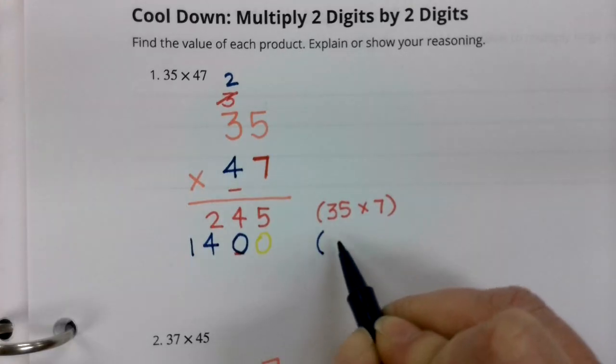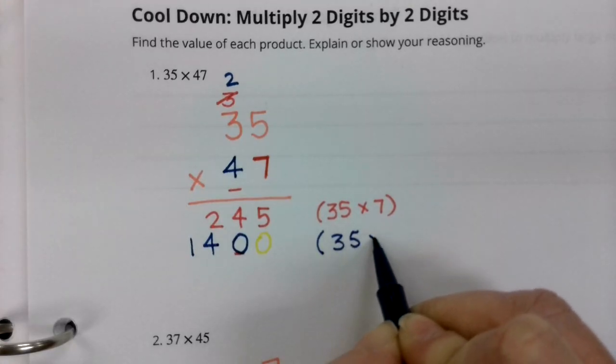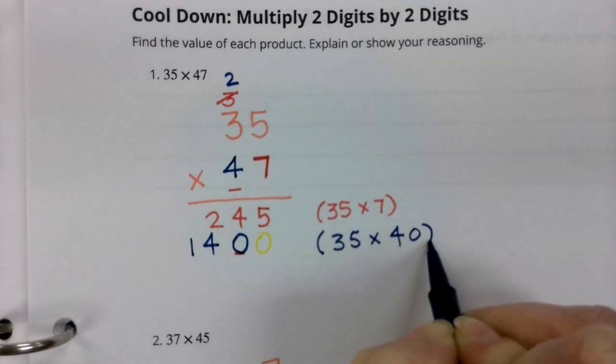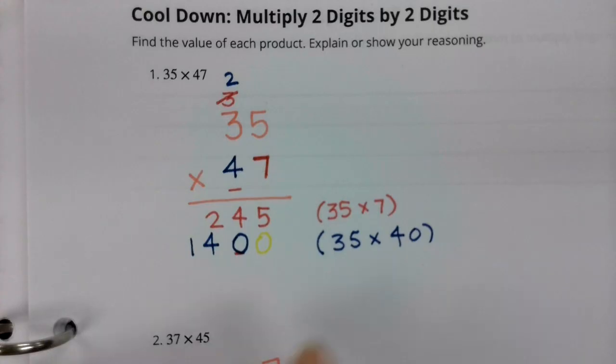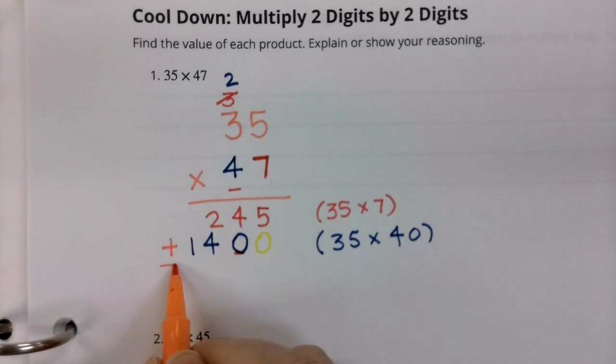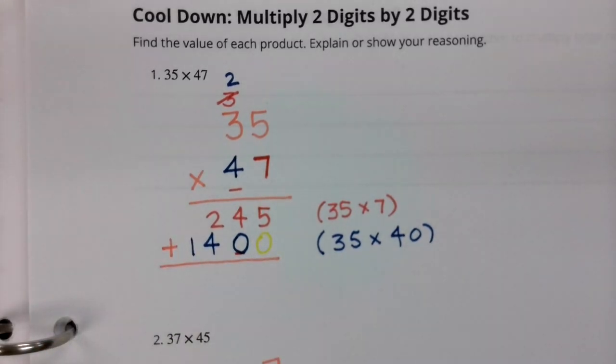And now I have another partial product. Remember, boys and girls, this is really the answer to 35 times 40. You do not need to write those to the side. But I want to make sure we clearly see exactly why this procedure works. Now let's add our partial products together.